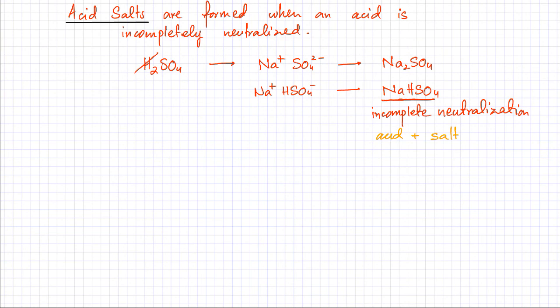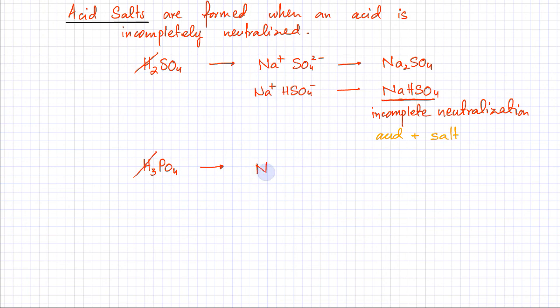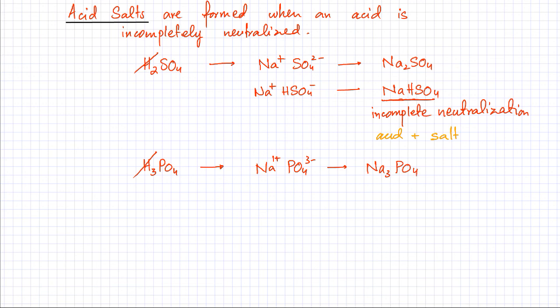In a similar way I can make other acid salts. For example, H₃PO₄ is an acid capable of producing three H⁺ ions. If I replace all three hydrogen ions using Na⁺ (which is 1+) and PO₄ (which is 3−), using the crisscross method I need three sodium ions to replace the three H⁺ ions, giving Na₃PO₄. This is complete neutralization, so Na₃PO₄ is a regular salt.